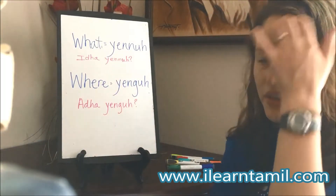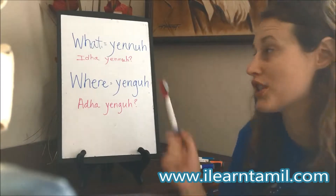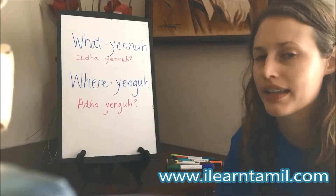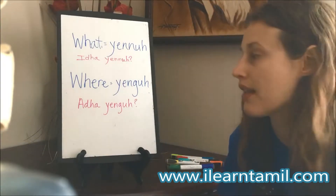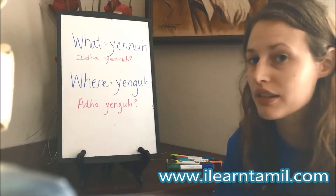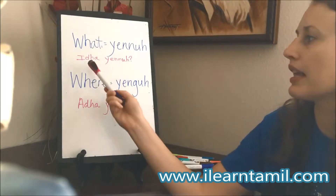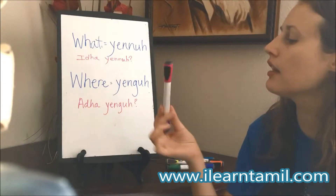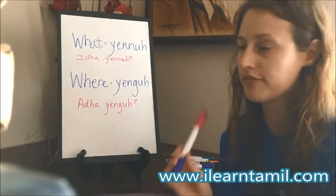Our very first question word we learned is the word for 'what,' which is yenna or enna. Some people say the 'y,' some people don't say the 'y.' So just a reminder, if we say 'what is this?' we say 'ita yenna' — 'ita yenna' — 'ita' is a marker.